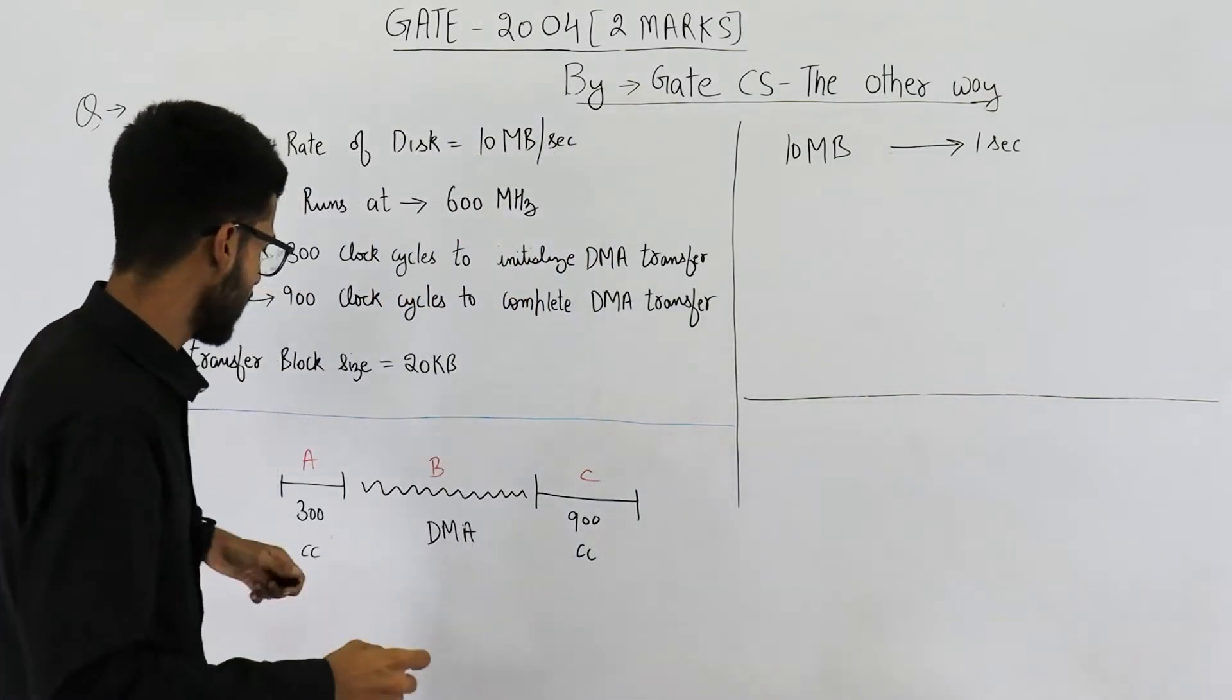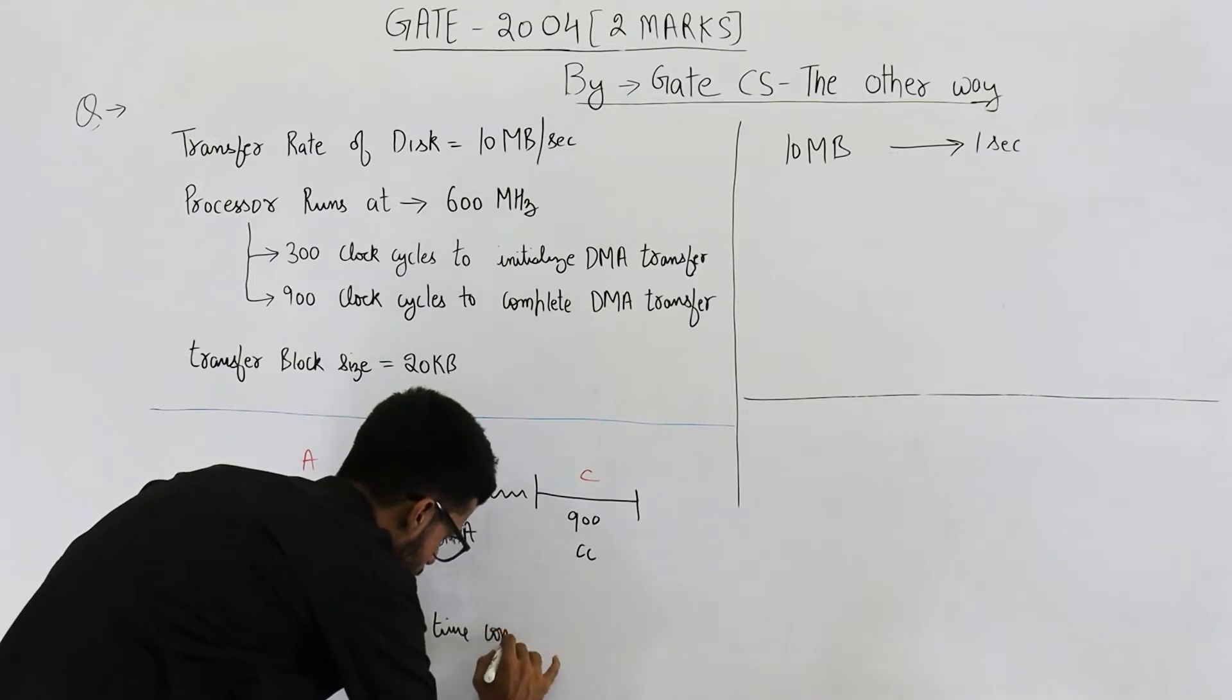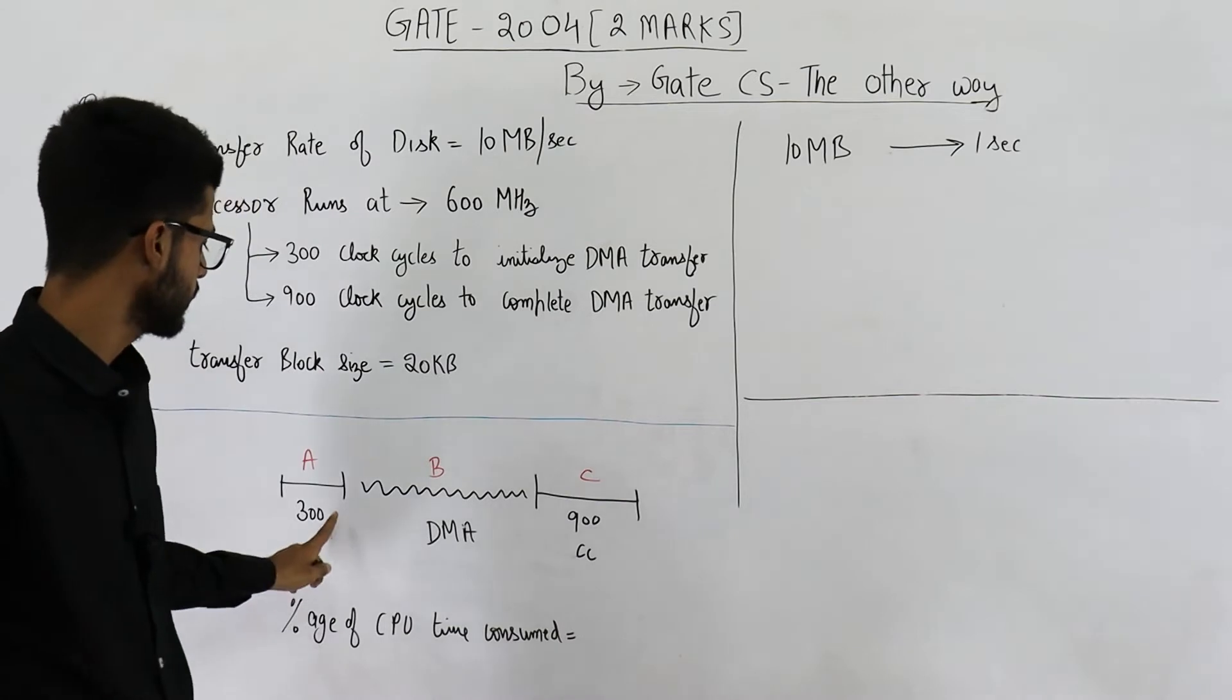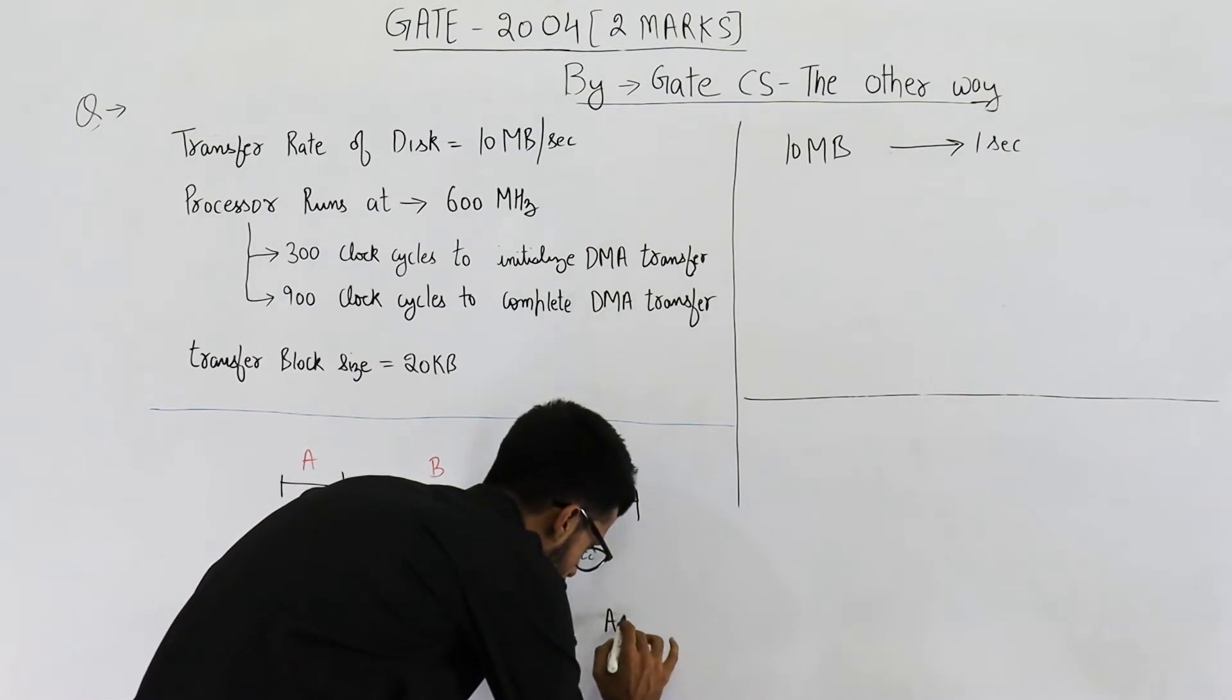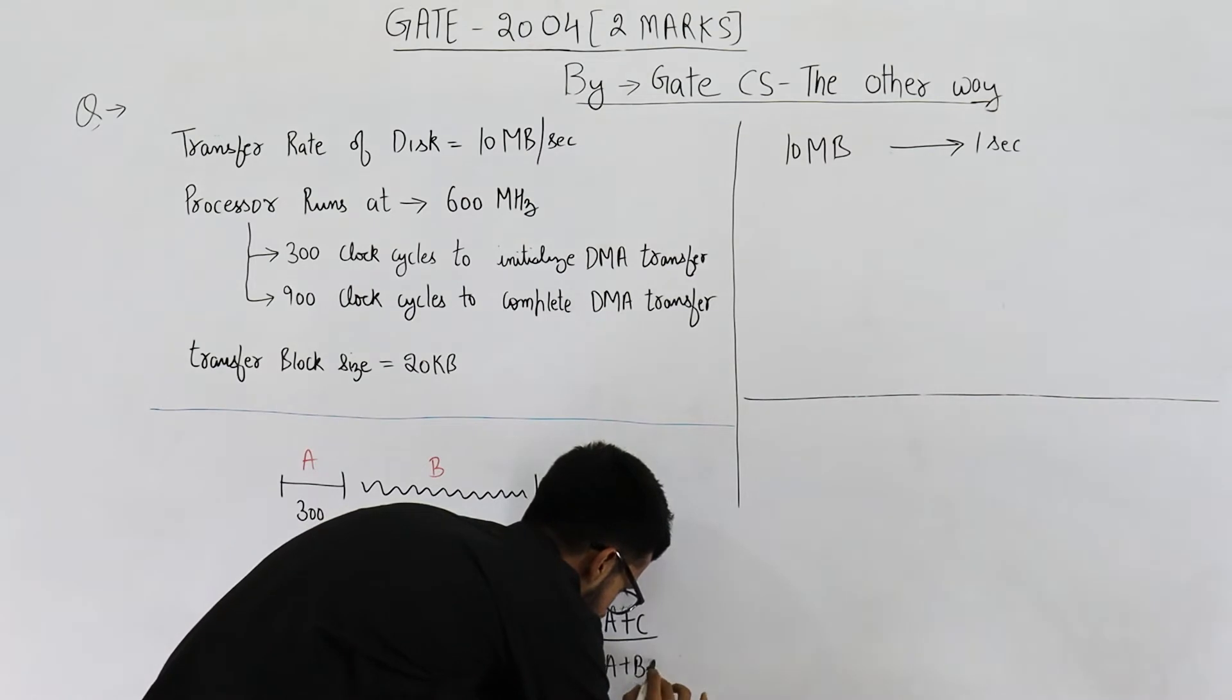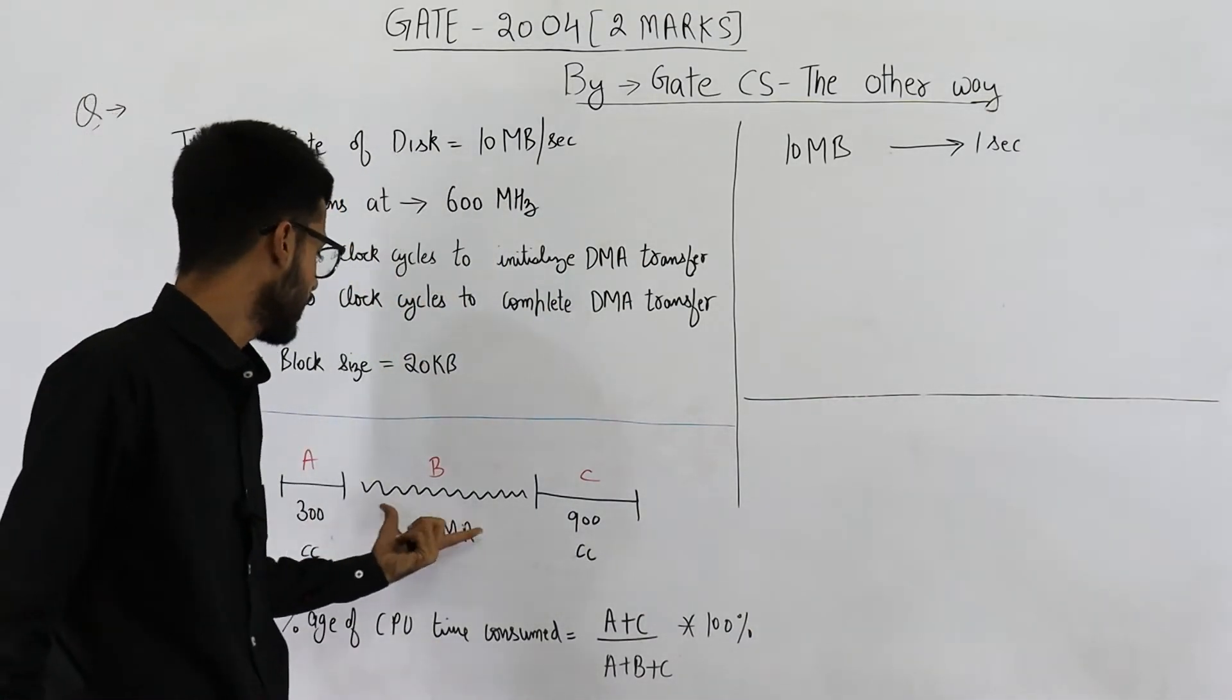That will be percentage of CPU time consumed. This will be A plus C because CPU spends only a total of 1200 clock cycles. This much and this much. So this will be time spent by CPU divided by the total time taken. Total time taken is this much which is A plus B plus C into 100 percent. So this will be your answer. Now we need to determine what is B and what is A plus C.